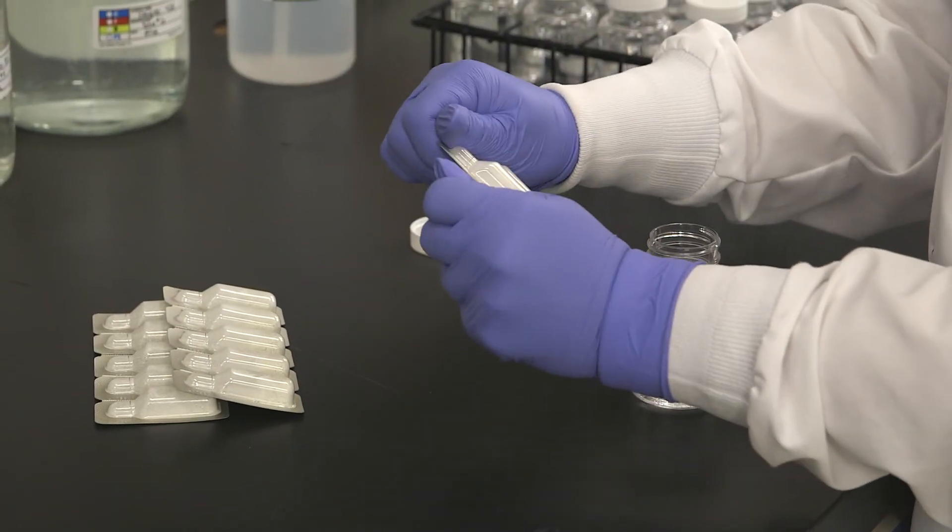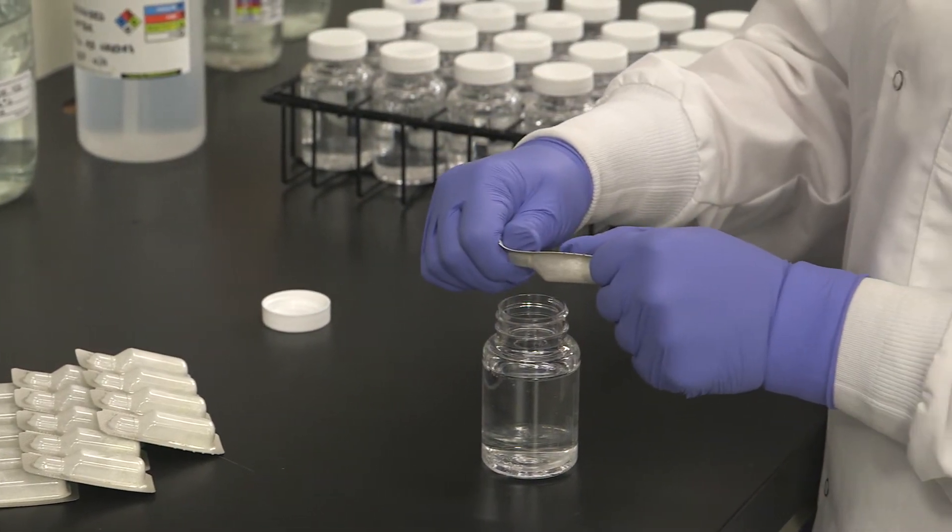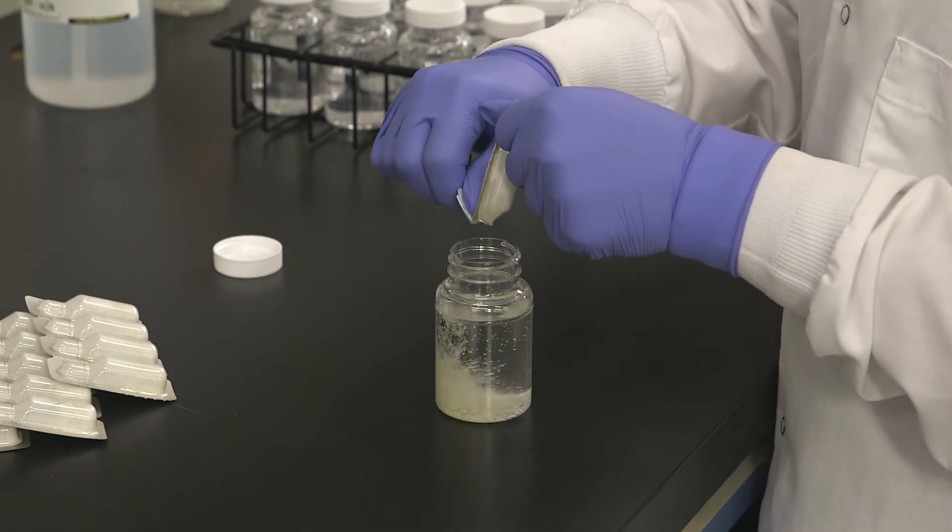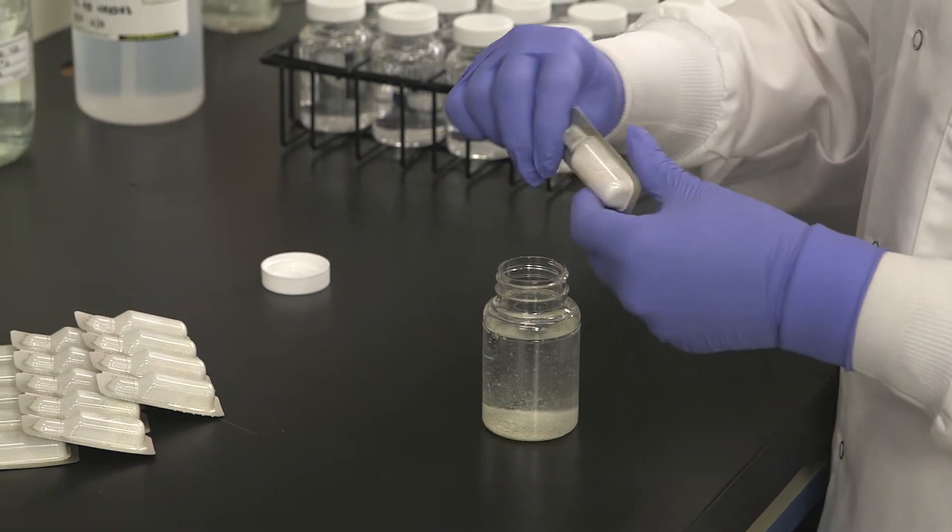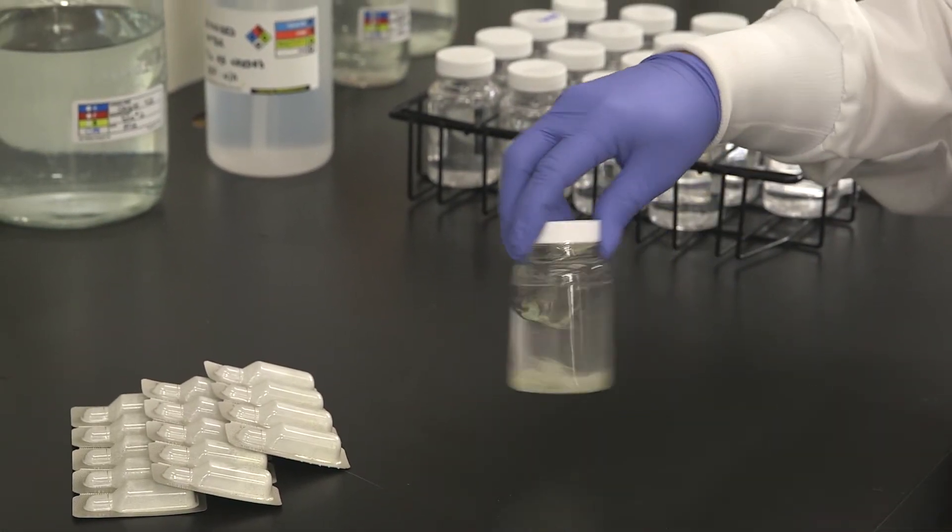Separate one ColiLert pack from its strip, taking care not to accidentally open the other packs. Snap open the reagent pack and pour the powder into a 100ml water sample. Cap the vessel and shake to dissolve the ColiLert powder.